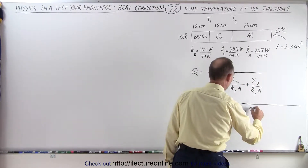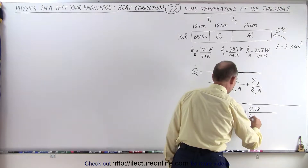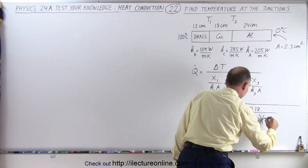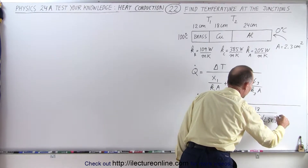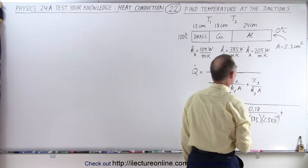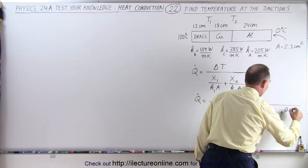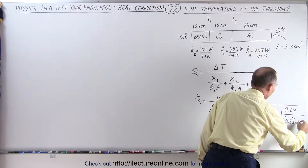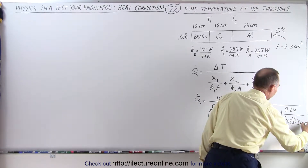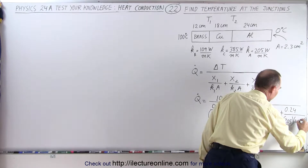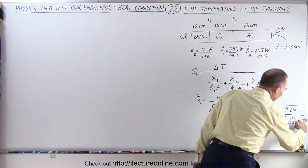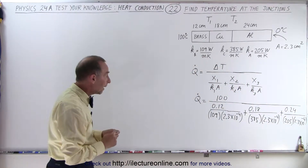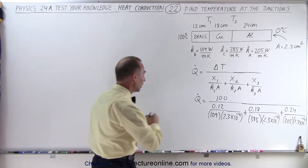Then plus 0.18 divided by 385 times the same cross-sectional area of 2.3 times 10 to the minus 4. And the last section is plus 0.24 divided by 205 times 2.3 times 10 to the minus 4. Those are the three heat resistances of the three materials, so now we can get Q-dot.